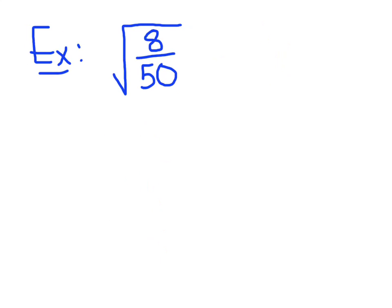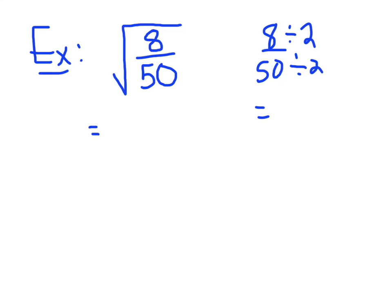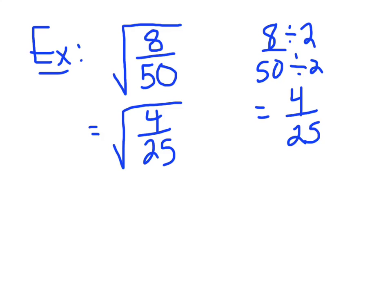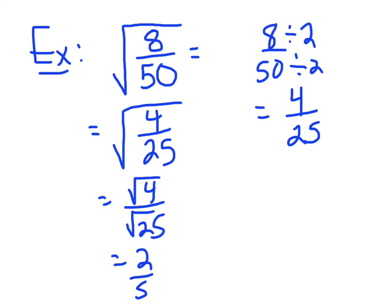This last example is a special case where it looks like I don't have two perfect squares — 8 is not a perfect square, and 50 isn't either. One thing I always tell my students: if you're asked to find the square root of a fraction, make sure the fraction is reduced to simplest terms first. Both 8 and 50 are divisible by 2, so dividing both by 2 gives us 4 over 25. Now we take the square root of 4 over the square root of 25, which equals 2 over 5.